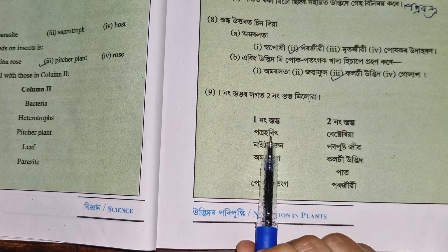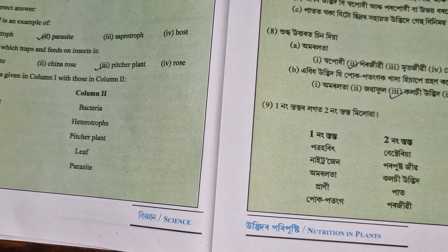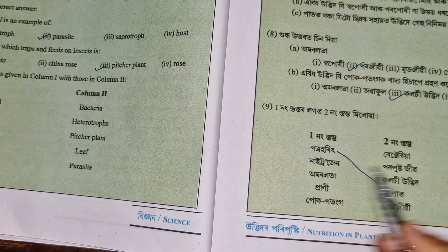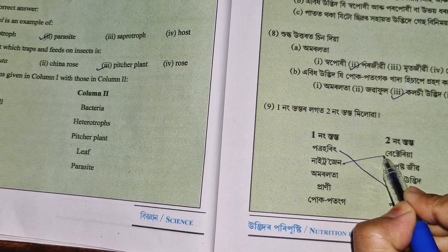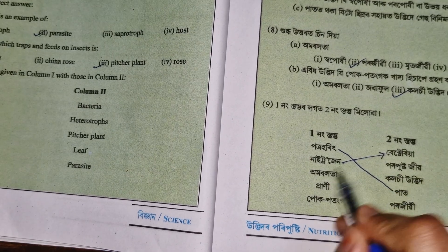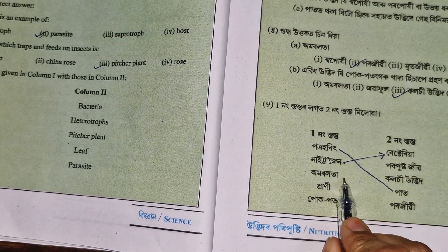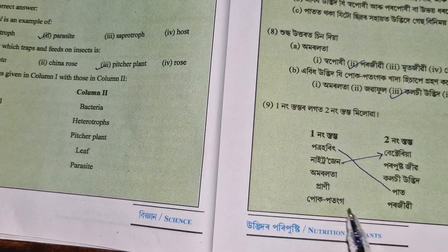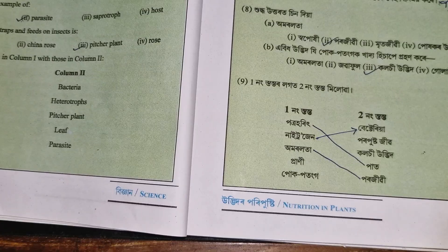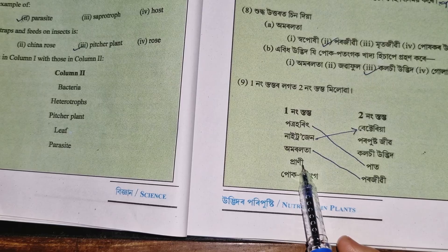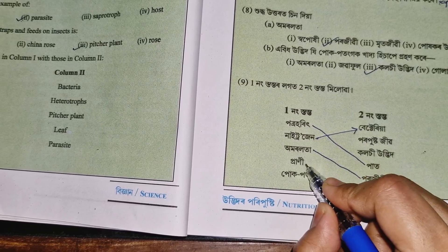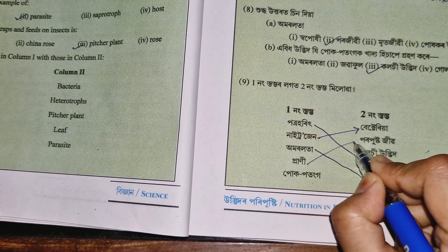Chlorophyll plays a key role in photosynthesis. Bacteria are also important — they fix nitrogen from the atmosphere. This nitrogen fixation by bacteria is a critical part of the nitrogen cycle and is important for plant nutrition.